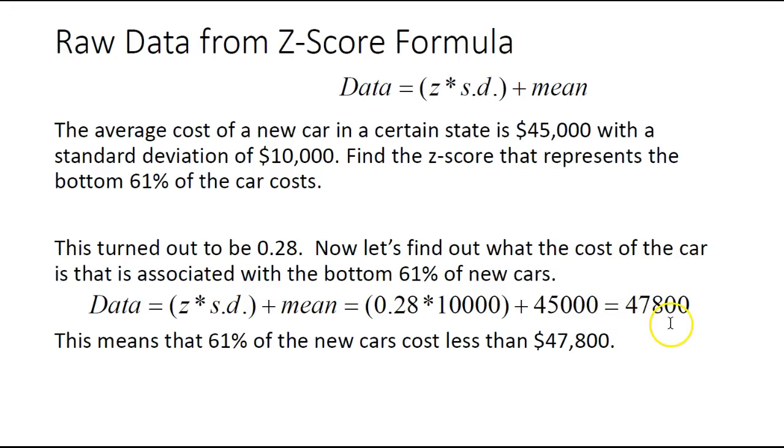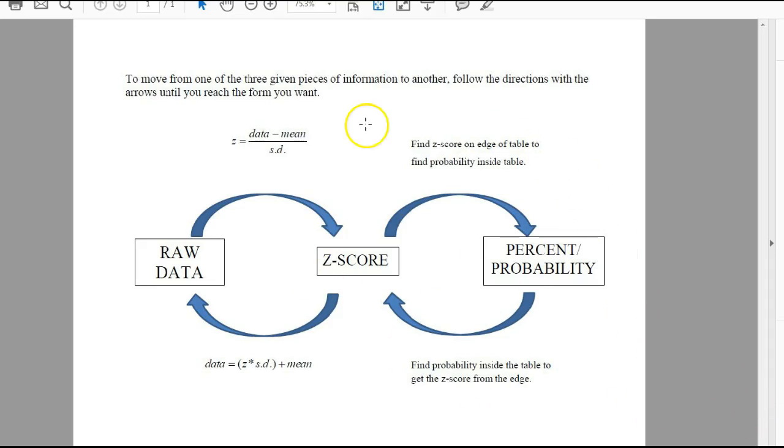Lastly, in the middle here we have raw data, z-score, and percent probability—the three things worth using. You may be given the data score, z-score, or probability. This table will help you get to the other part. If you're given a value and want the probability, you go through the z-score to get to the probability. If you're given the probability and want the actual value, you can follow along to get back to that actual value.